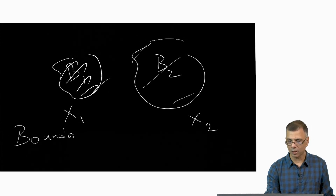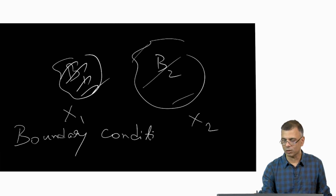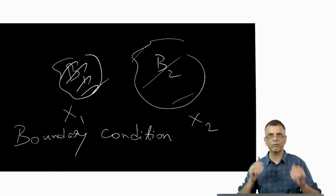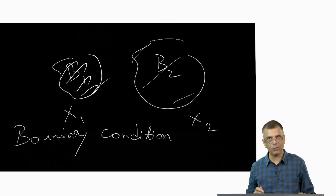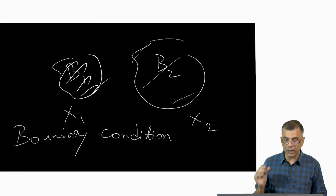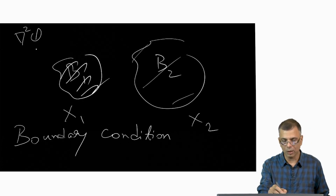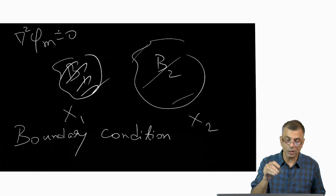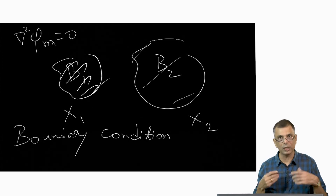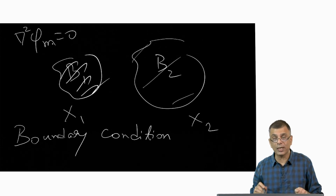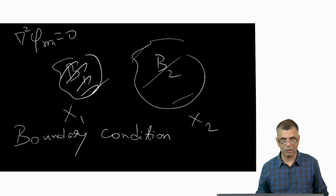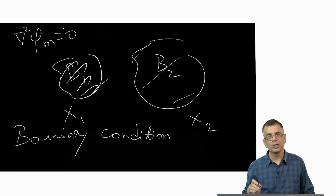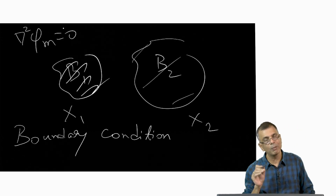Given those boundary conditions, there can be many solutions. The question is: given these boundary conditions, what is the magnetic field configuration in the entire volume — say, in the corona above the photosphere? It turns out that if you solve for a potential field — solving Laplace's equation with these boundary conditions — then the solution that φ_m gives you is the one that will have the minimum possible energy of any solution.